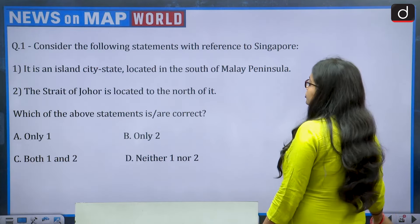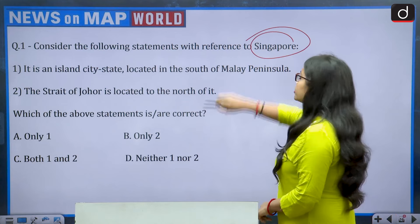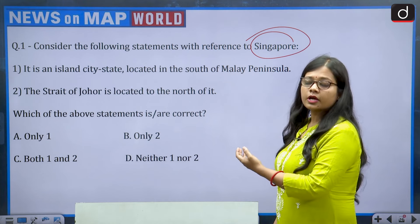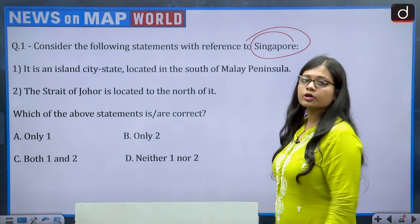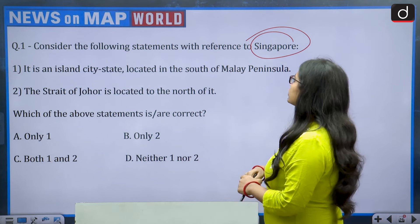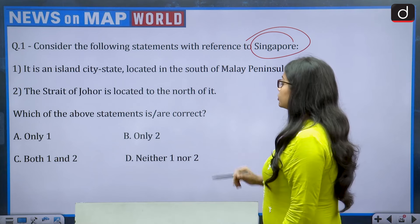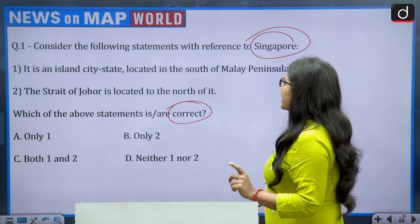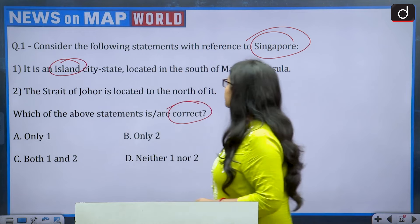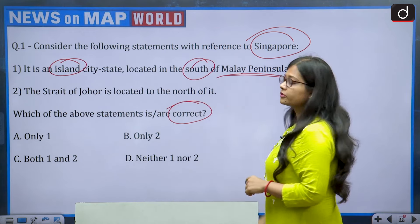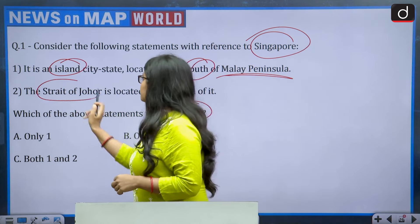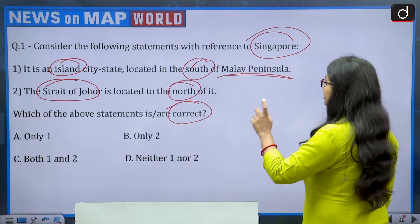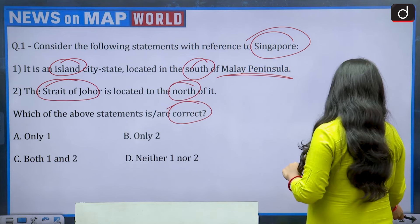Moving to today's episode. The first question: consider the following statements with reference to Singapore. Singapore is in the news because Prime Minister Narendra Modi is on a visit to Brunei and Singapore. Two statements: first, it is an island city-state located to the south of the Malay Peninsula; second, the Strait of Johor is located to the north of it.